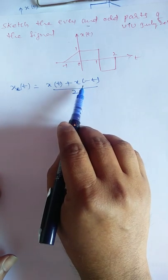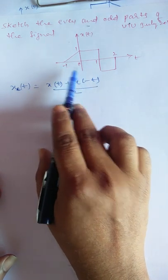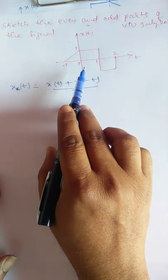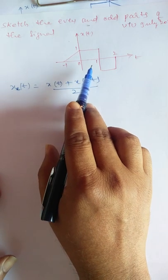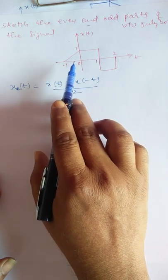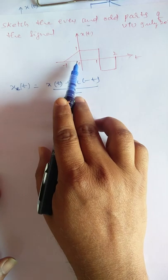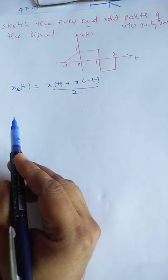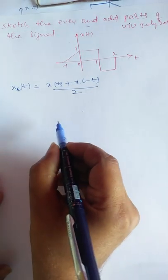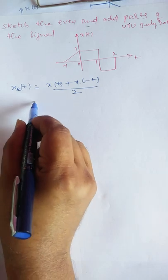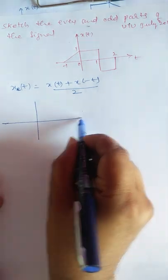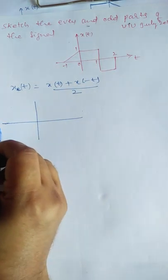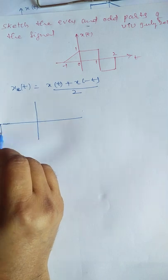What is x(-t)? x(-t) is the time reversal or reflection of this given signal. To write x(-t), what is there on the left-hand side of x(t) we write to the right-hand side, and what is on the right-hand side we put on the left-hand side. So x(-t): the signal existing from 0 to 2 can be written in the 0 to minus 2 range.